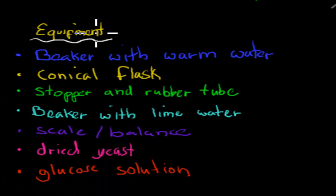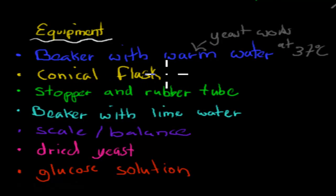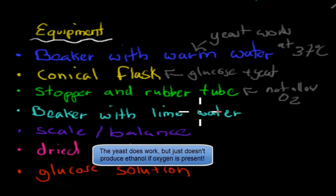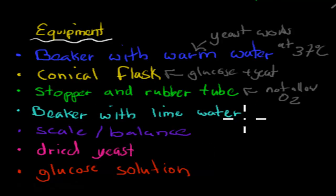The equipment. For the equipment, this is what you would have had. A beaker with warm water, because the yeast works best at about 37 degrees Celsius. You would have had your conical flask. This is where you had your glucose and your yeast inside. You would have had a stopper and a rubber tube to not allow oxygen to enter, because oxygen can make sure that the yeast doesn't work. We've got a beaker with lime water to test for CO2.